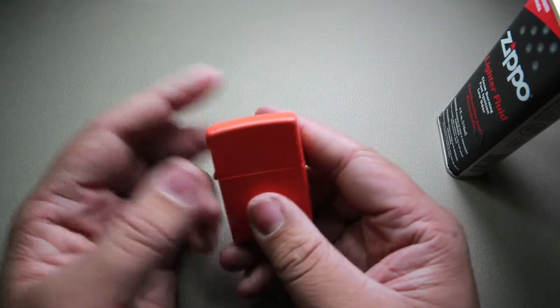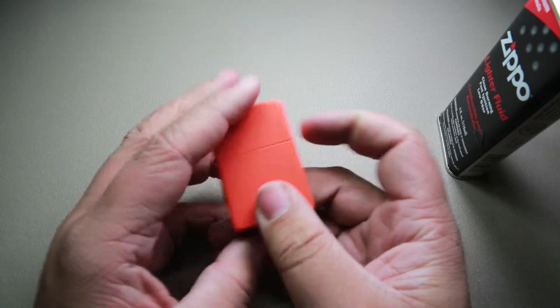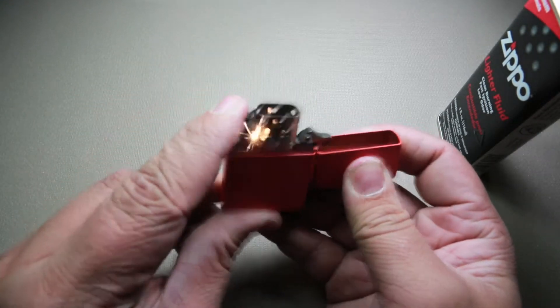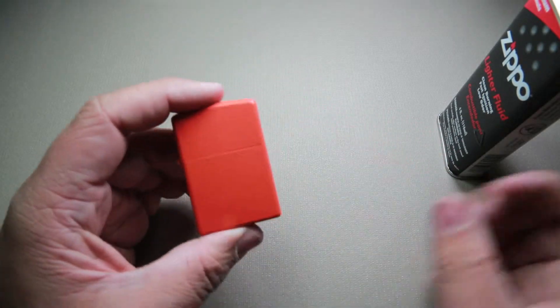Just give it a few seconds to make sure that the rayon walls are all soaked up with the Zippo fluid. As you can see, the Zippo works perfectly fine now and that is the best way to fill up your Zippo.